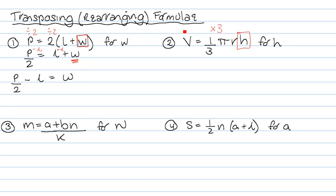Whatever we do to that side, we also have to do to the other side. So what I now have is 3V equals 1 third times 3 is 1. So I'm left with the pi RH. Now I still need H on its own. So I need to get rid of that pi R. H is being multiplied by pi R. So I can get rid of it in one go by simply dividing both sides by pi R. So now I have 3V over pi R equals H. And that's done.